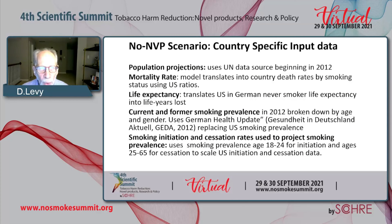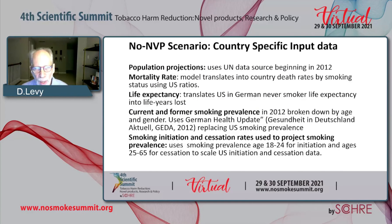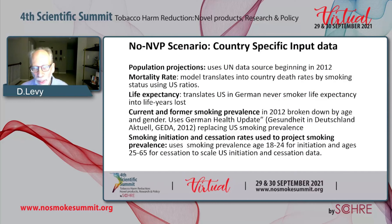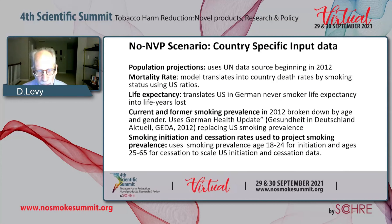Starting with the no-NVP scenario — and this is for Germany where the model begins in 2012 — we use Germany's population. Mortality rates are distinguished by smoker status: current, former, and never smoker, using U.S. rates that we translate into German rates using Germany's death rates. Similarly, we translate life years lost into comparable German-level outcomes.